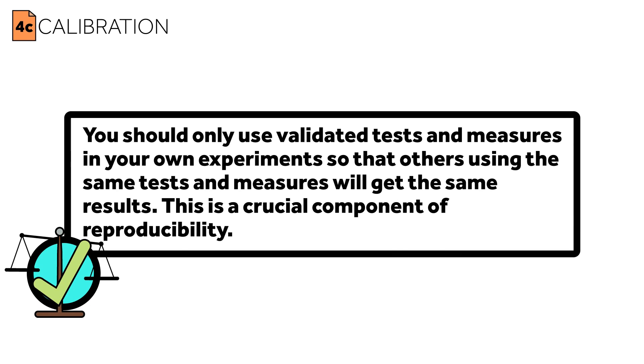Whole experiments need to be set up to validate new tests. In the same vein, we should only use validated tests and measures in our own experiments. That way you can make sure that others using the same tests and measures will get the same results — this is a crucial component of reproducibility. If you're not using a validated scale or measure, you have to perform that work yourself. You can't just use some new technique or instrument without showing that it's accurate and precise. Such work can often result in its own publications.